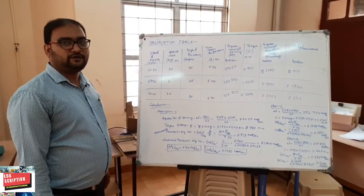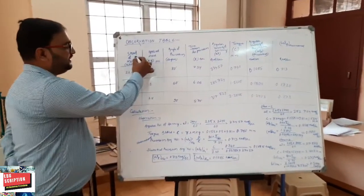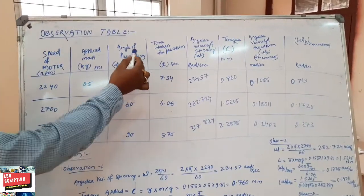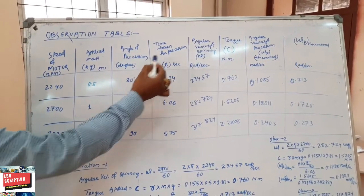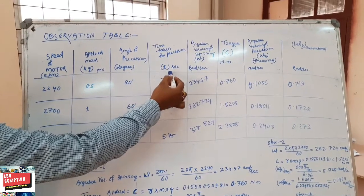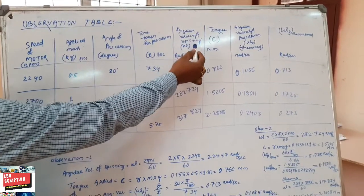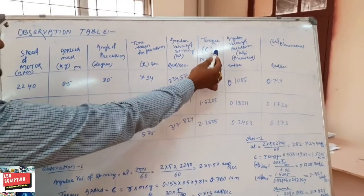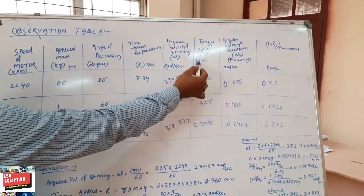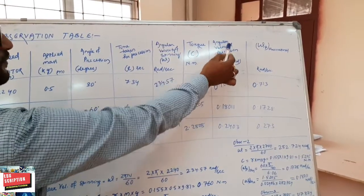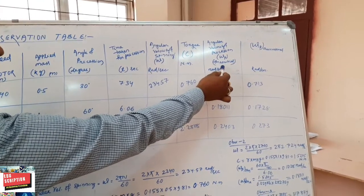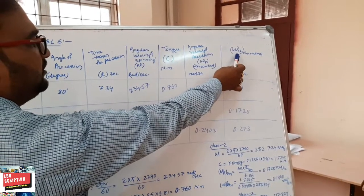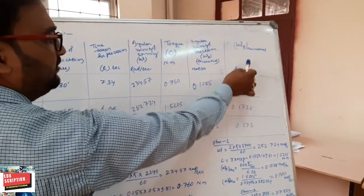Moving to the observation table: the columns are speed of the motor, applied mass in kg, angle of precession in degrees, time taken for precession t in seconds, angular velocity of spinning omega in radians per second, applied torque C in Newton-meters, theoretical angular velocity of precession omega-p theoretical in radians per second, and observed angular velocity of precession omega-p observational in radians per second.